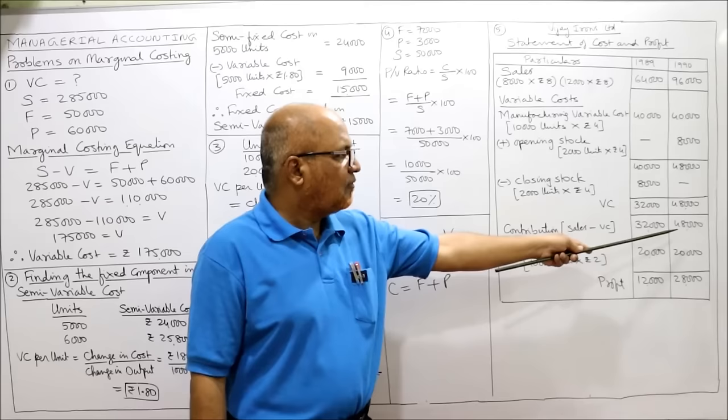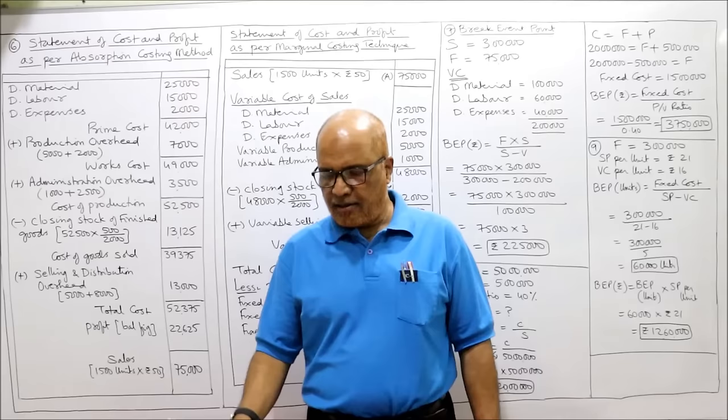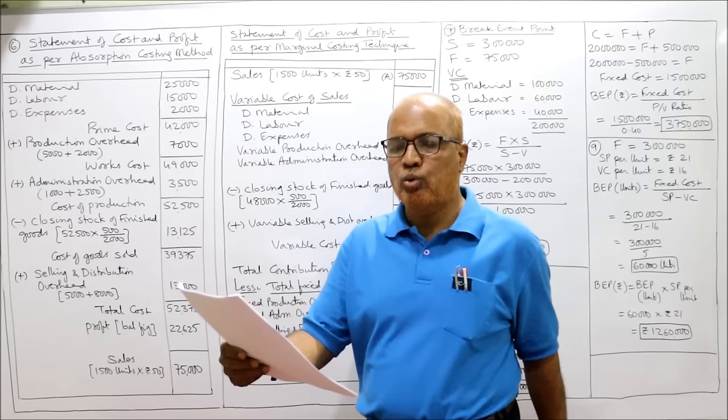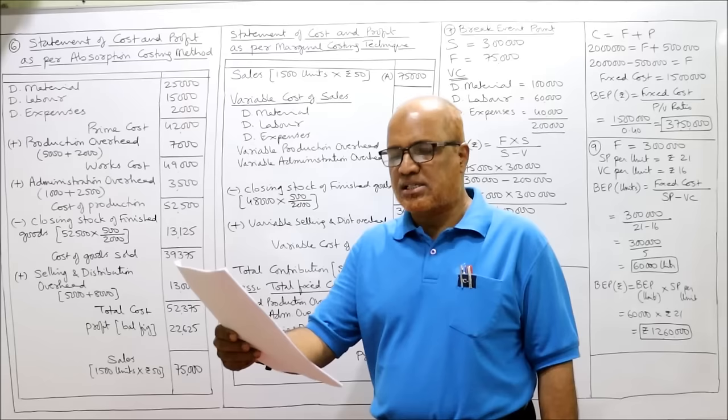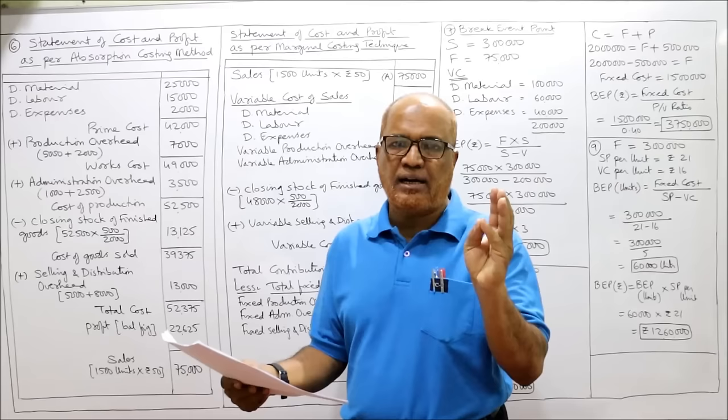Problem number 6: in a period, a concern produced 2,000 units of a particular commodity. Selling price is 50 rupees per unit. Relevant costs: direct material 25,000, direct labour 15,000, direct expenses 2,000. Production overheads: variable 5,000, fixed 2,000. Administration overhead: variable 1,000, fixed 2,000. Selling and distribution overhead: variable 5,000, fixed 8,000. Assuming closing stock of 500 units, prepare an operating statement under both absorption costing and marginal costing.